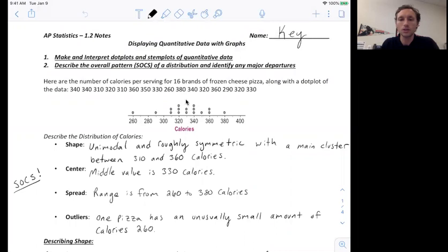It's roughly symmetric because if you cut it in half and fold it on itself, it matches up pretty close. You most likely won't have many distributions that are perfectly symmetric, so we're always going to say they're roughly symmetric. And then just make a note of where most of that is. It mostly is between 310 and 360. That's where most of the pizzas are.